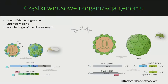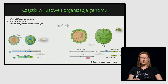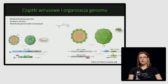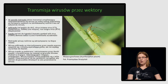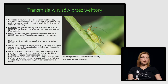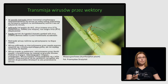Wirusy roślinne są przenoszone przez liczne wektory – owady, grzyby, nicienie, aczkolwiek najlepiej zbadane są owady. Mszyce, konkretnie mszyca grochowa, bardzo wydajnie przenoszą wiele wirusów roślinnych. Dosyć ważne jest to, w jaki sposób wirusy są przenoszone przez wektory – mogą być przenoszone na trzy sposoby.